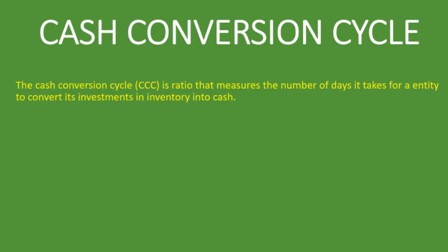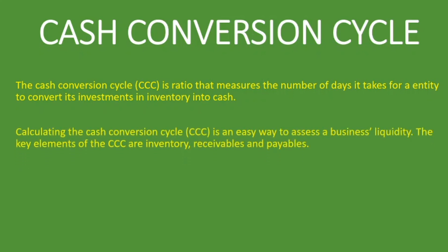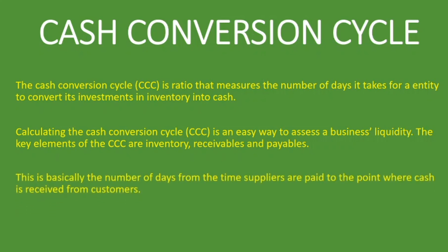The cash conversion cycle is a ratio that measures the number of days it takes for an entity to convert its investments in inventory into cash. Calculating the cash conversion cycle is an easy way to assess a business's liquidity. The key elements are inventory, receivables, and payables.